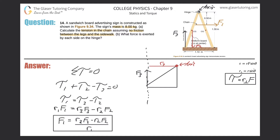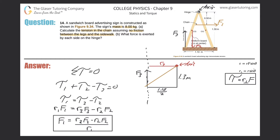This creates a rectangle with four 90-degree angles. The height of the board is 1.3 meters. The full board width from end to end is 1.1 meters, but since I'm looking at half the board, the base is 1.10 over 2. Since opposite sides of a rectangle are equal, R3 equals 1.10 over 2.